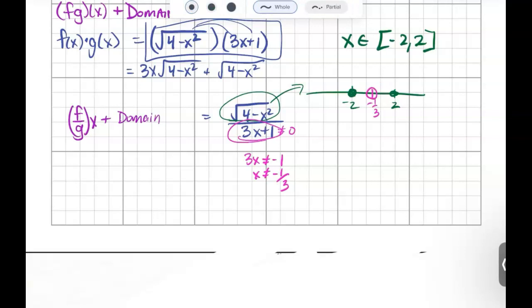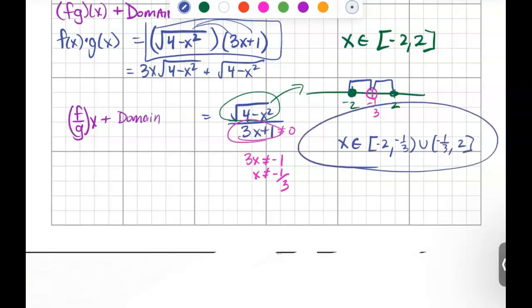So I'm going to erase my shading, and now it's going to be negative 2 to negative 1 third, and then negative 1 third to positive 2. So that would change my domain into negative 2 to negative 1 third, parentheses, and then negative 1 third to 2 with bracket.